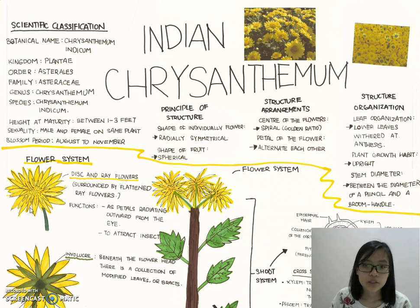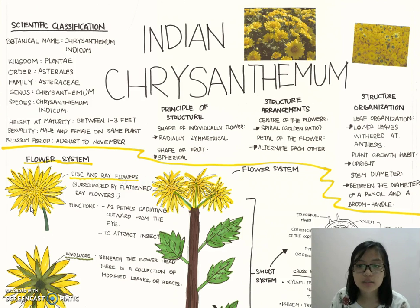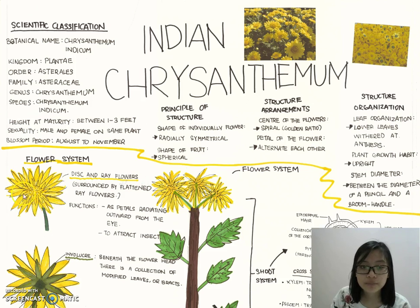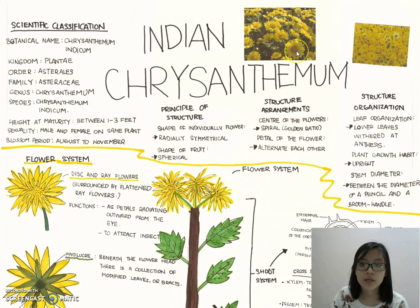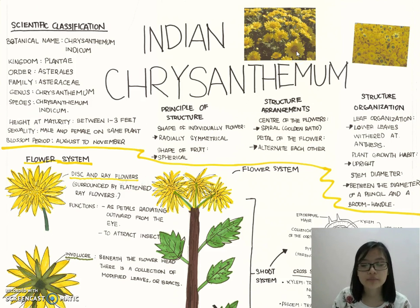The shape of the fruit is spherical. The structure arrangement of the center of flowers is spiral, which you can see in this picture. It is spiral, and the petals of the flower are overlapping each other.